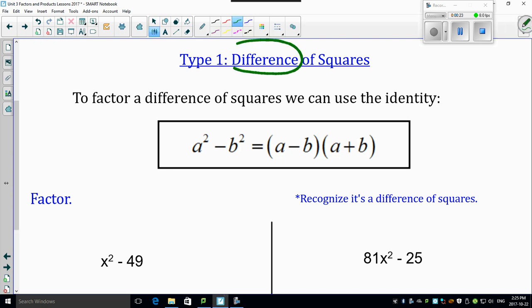What does the word difference actually mean? Difference means subtraction. What does the word squares mean? Square means that this is a square, that's a square. So you can square root the a and the b. What do I mean? Look, watch.